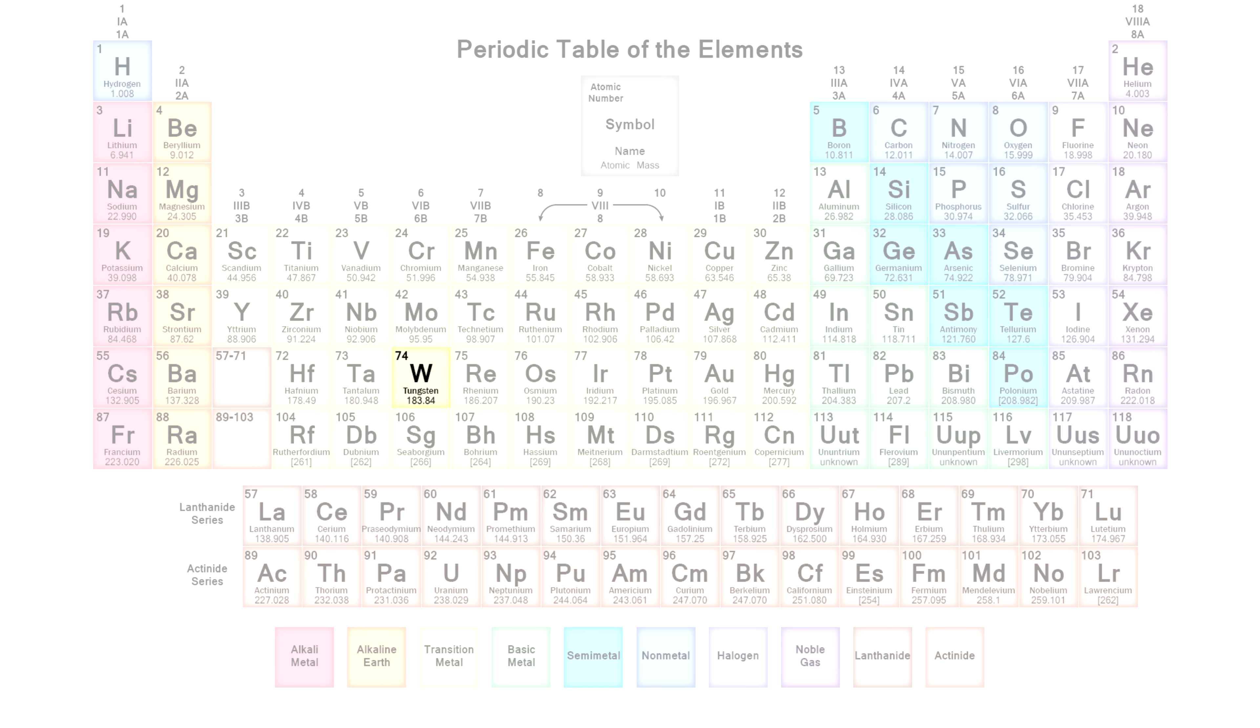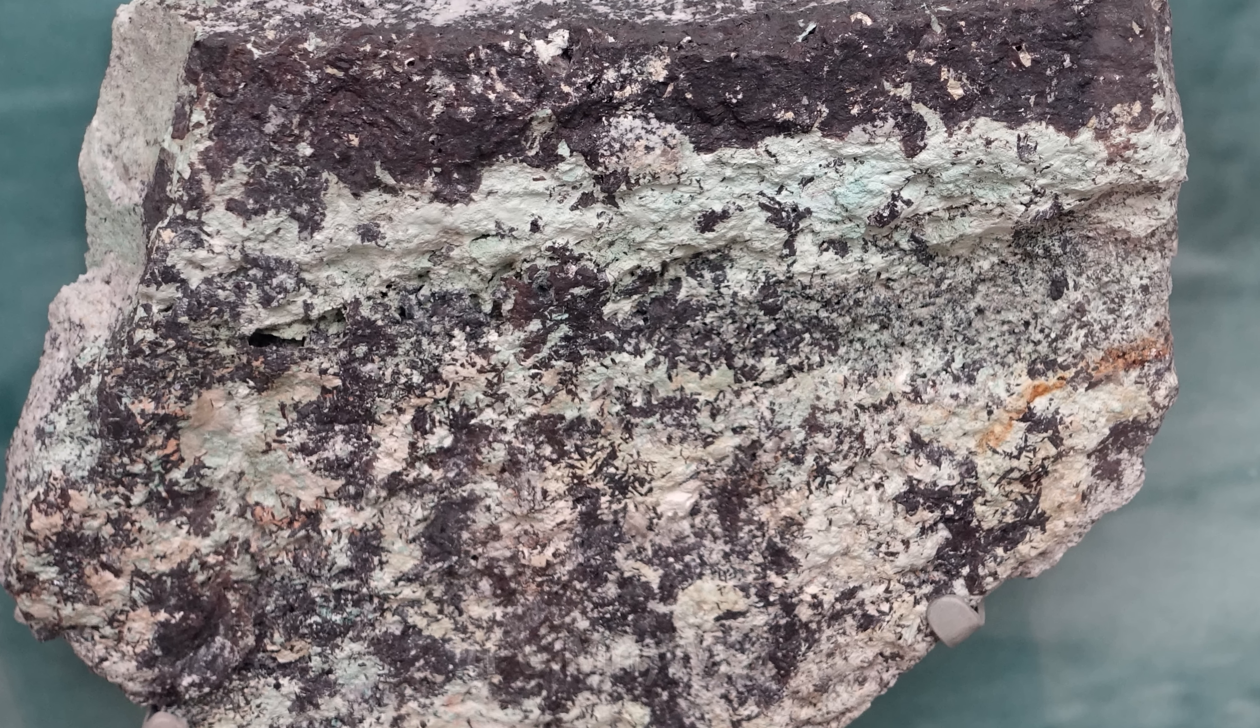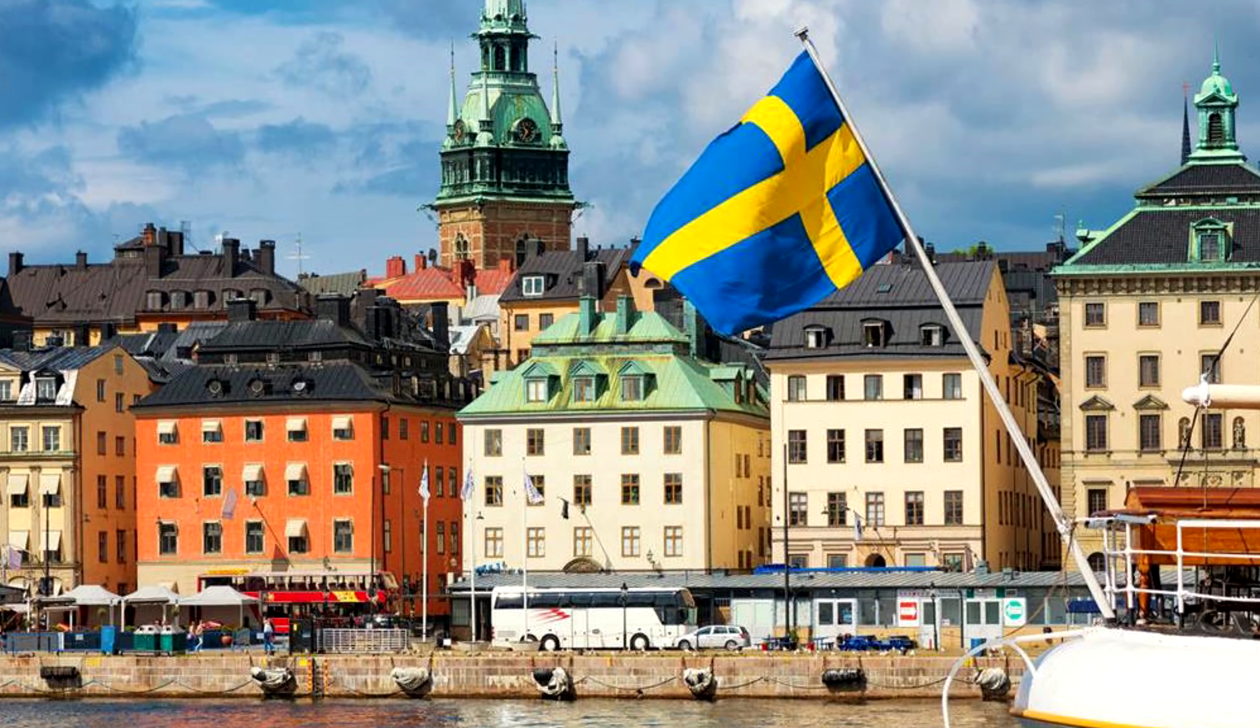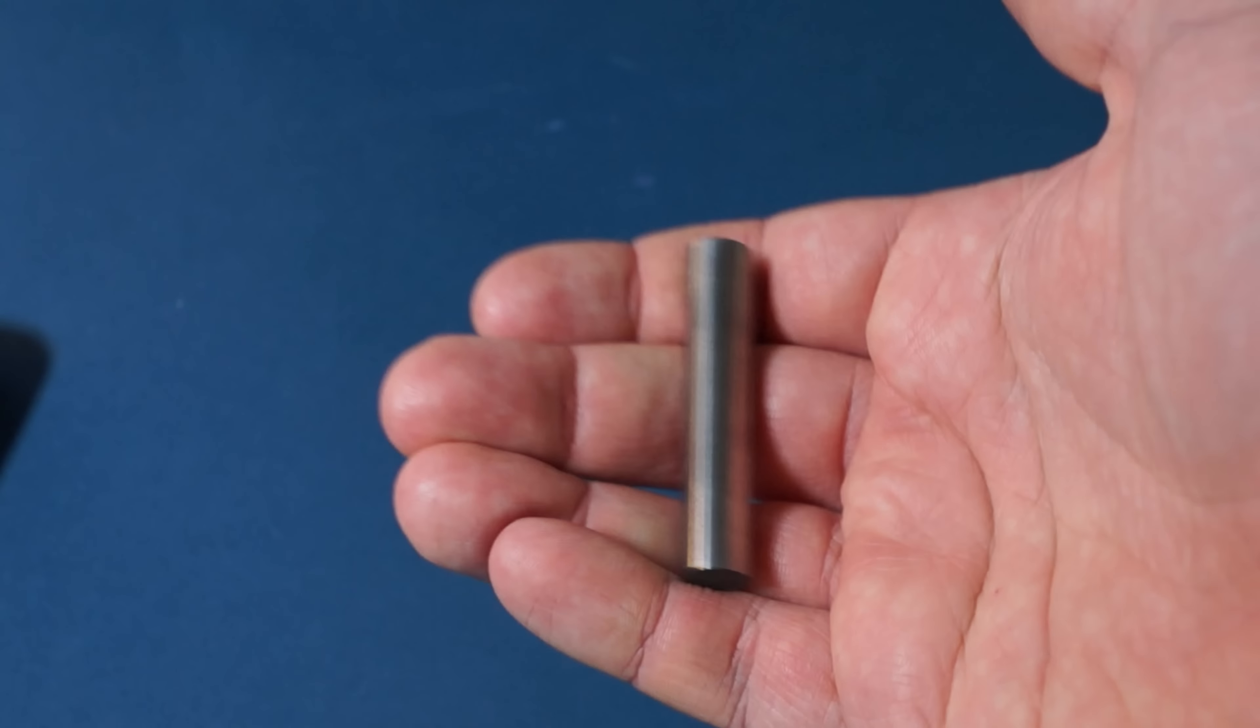Tungsten is one of the transition metals and is located in group 6 of the periodic table of chemical elements. It got its name from the mineral Wolframite, from which this metal is obtained. Also a tiny fun fact – Wolfram is a Swedish word. Now if we look at the appearance, tungsten looks like a shiny metal.